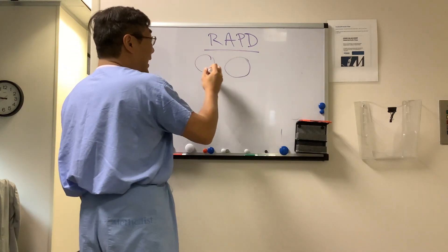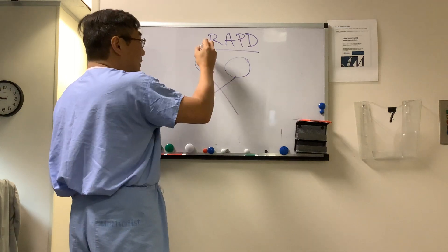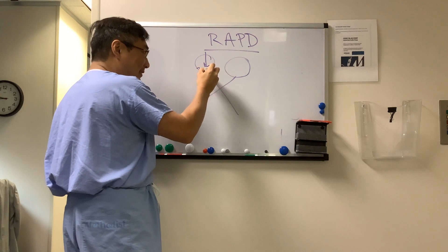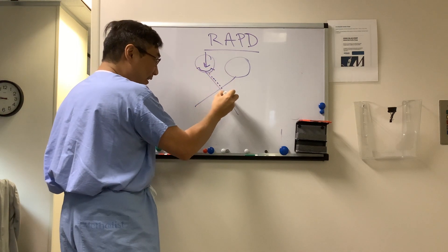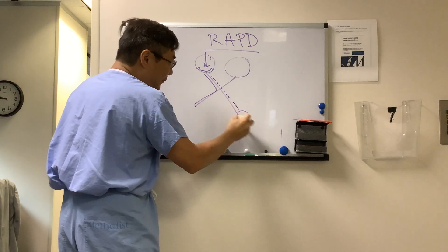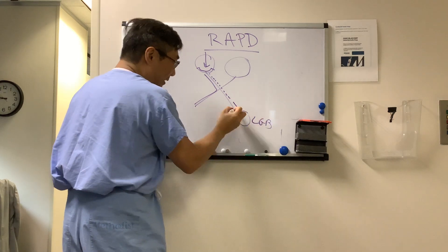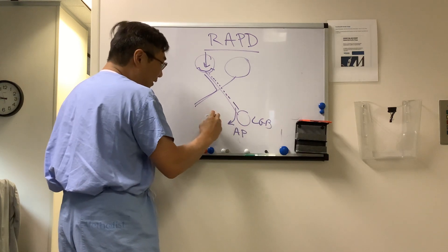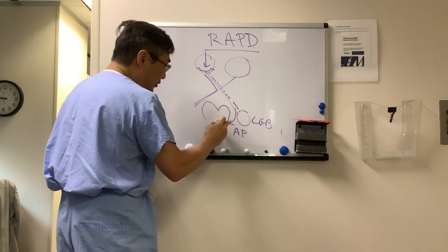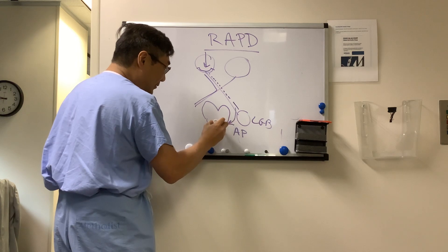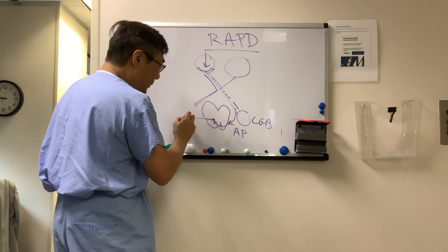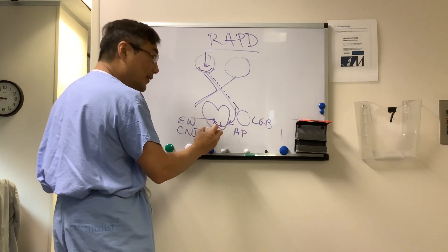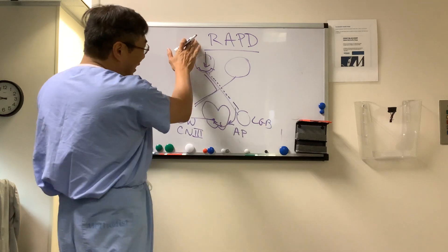Here's the afferent pupillary pathway. The signal comes in, hits the retina, retinal ganglion cell, axon of optic nerve, crossing nasal fiber, uncrossed temporal fiber. But before we get to the lateral geniculate body, the afferent pupil fiber comes off and goes to the dorsal midbrain, pre-tectal nuclei, connecting to the efferent pathway, which is the Edinger-Westphal nucleus in cranial nerve three.